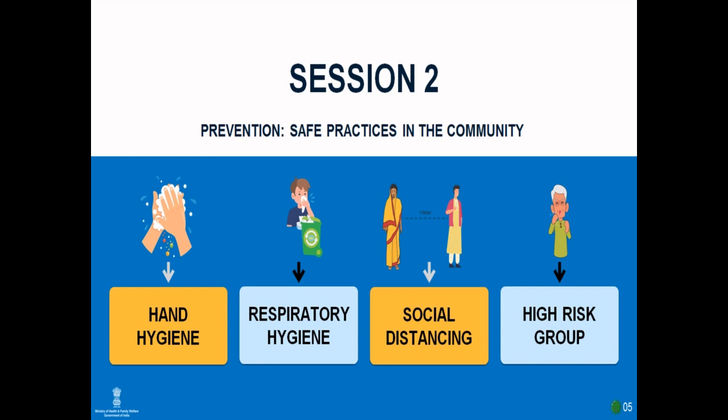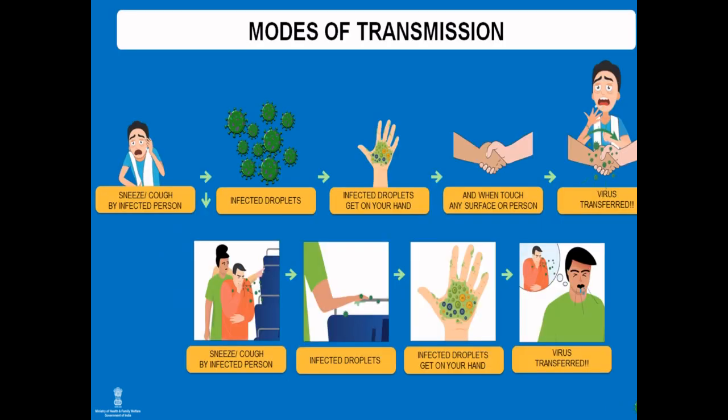Coming to Session 2, which mainly deals with hand hygiene, respiratory hygiene, social distancing, and high risk groups. Regarding the mode of transmission: COVID-19 is mainly transmitted through large respiratory droplets. When an infected person sneezes or coughs, infected droplets settle on surfaces — including your hands — and when you touch another person or a surface, the virus gets transmitted.